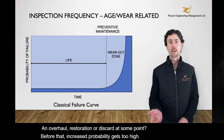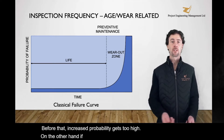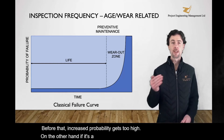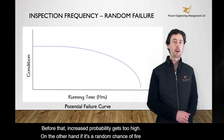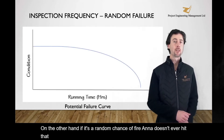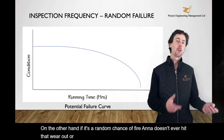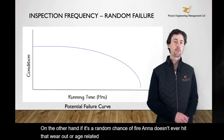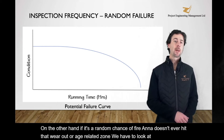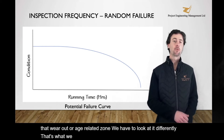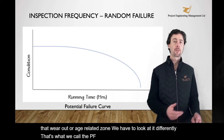On the other hand, if it's a random chance of failure and it doesn't ever hit that wear-out or age-related zone, we have to look at it differently. That's what we call the PF interval — the potential failure curve.